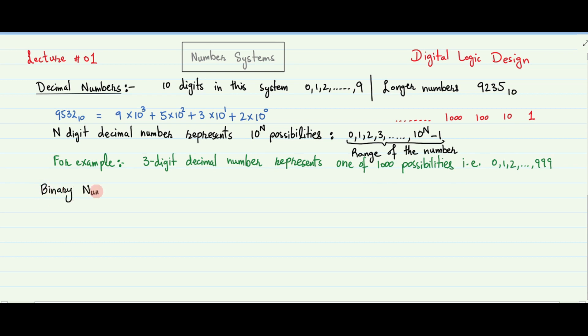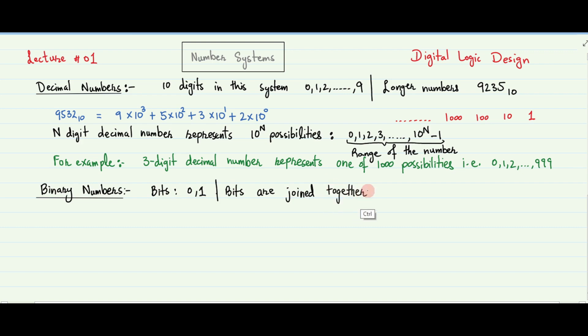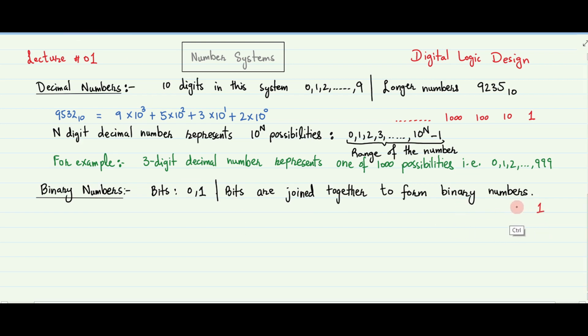Our second subject in number systems is binary numbers. In binary numbers, each digit is called a bit, which is represented by one of two values, that is 0 or 1, and bits are joined together to form binary numbers.